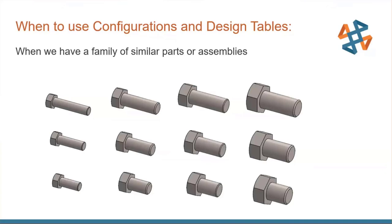The hex bolt is a perfect example of a SolidWorks part to apply a design table to — similar shapes with different diameters, lengths, and hex head sizes. I like to say you would never use configurations to turn a model of an end wrench into a hammer — those are two different geometries. But a family of end wrenches is a great example, or any scenario where models are mostly the same but ever so slightly different. Configurations also work well to simplify a part or set it up for finite element analysis.